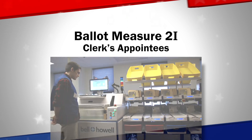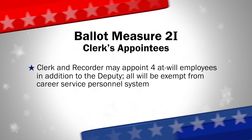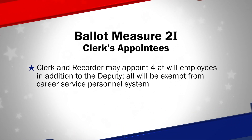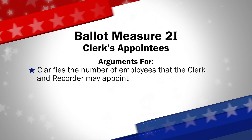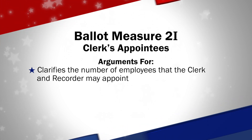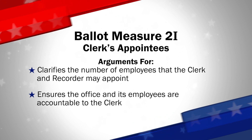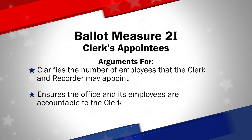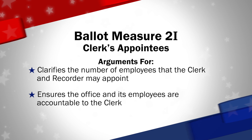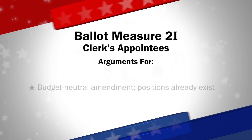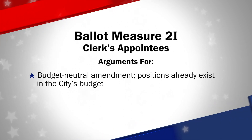Ballot measure 2I would clarify that the clerk and recorder may appoint four at-will employees in addition to the deputy, all exempt from the career service personnel system. Those in favor of 2I say the amendment clarifies the number of employees that the clerk and recorder may appoint in his or her office and will make the legislative intent explicitly clear. This amendment will ensure that the office and its employees are accountable to the clerk and recorder. Because the clerk is ultimately responsible to the voters for how the office runs, he wants high-level employees to be responsible to him. This will be a budget-neutral charter amendment using appointments on positions that already exist in the city's budget.